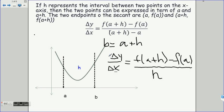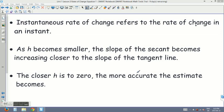Here we've been talking about average rate of change. However, we can also take a look at how we can use this to find the instantaneous rate of change. As long as h gets really small and almost approaches zero, we can use the same equation in order to find the instantaneous rate of change, as long as we have a small interval. The instantaneous rate of change refers to the rate of change in an instant. As h becomes smaller, the slope of the secant becomes increasingly closer to the slope of the tangent. So the closer h is to zero, the more accurate the estimate becomes. We can choose a smaller h, and that will give us a more accurate estimate of the instantaneous rate of change.